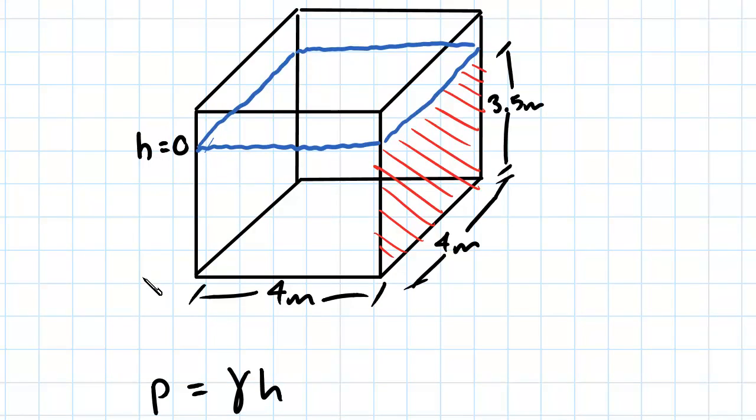And we're going to call h equals 3.5 as right at the bottom. So you can see that at the bottom we have 3.5 meters of water on top, and at the top we have 0 meters of water on top because we're at the surface.